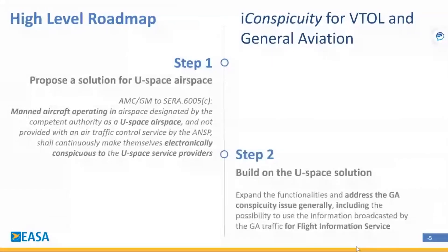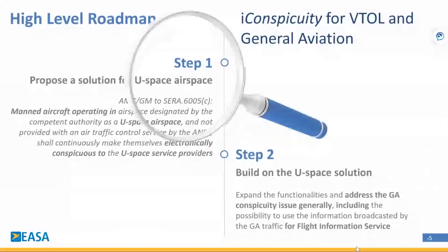Step 2 will build on step 1. Beyond the constraint imposed by the requirement from CERA for USPACE, we want to expand the functionalities and address the GA conspicuity issue more broadly, including the possibility to use the information broadcasted by the GA traffic for flight information service. The next presentation will elaborate on step 1. Thank you for your attention.